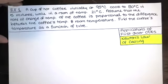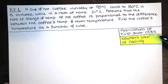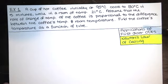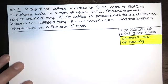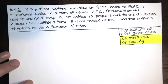In this video, we solve another example problem for applications of first order ordinary differential equations. This case involves Newton's law of cooling. You don't actually have to know it's called Newton's law of cooling — everything you need to know about solving this problem is in the problem statement. A cup of hot coffee initially at 95 degrees Celsius cools to 80 degrees Celsius in 5 minutes, while in a room of temperature 21 degrees Celsius.